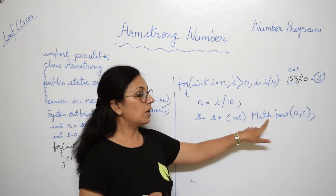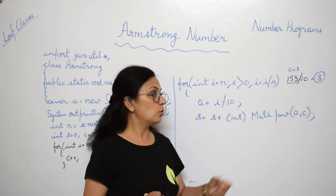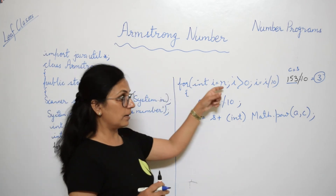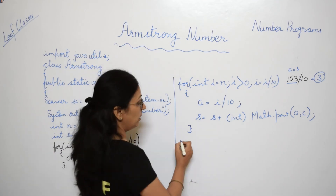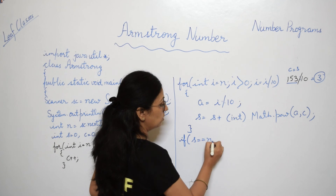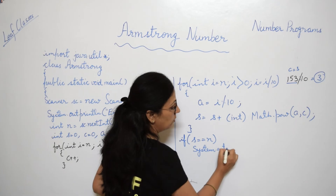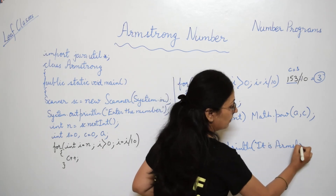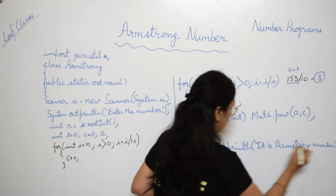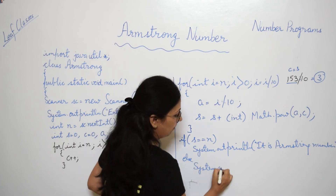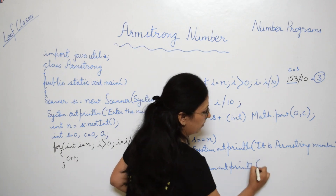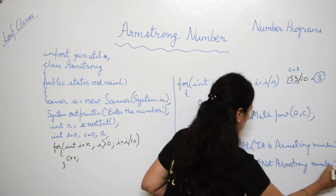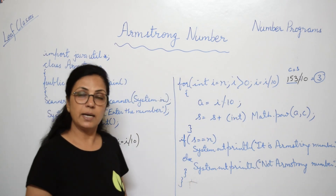We are converting the pow result to int type and adding it to s. After the loop extracts every digit and accumulates the sum, we finally check: if s equals n, display 'It is an Armstrong number'; else display 'It is not an Armstrong number'. Then close the main method and the class.